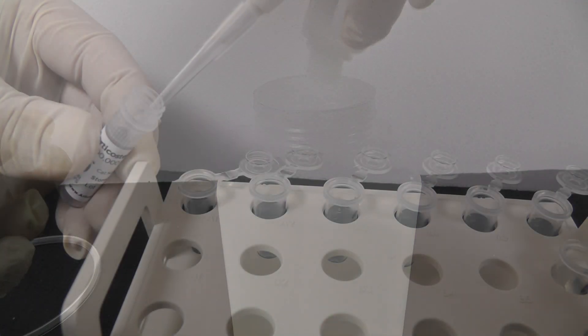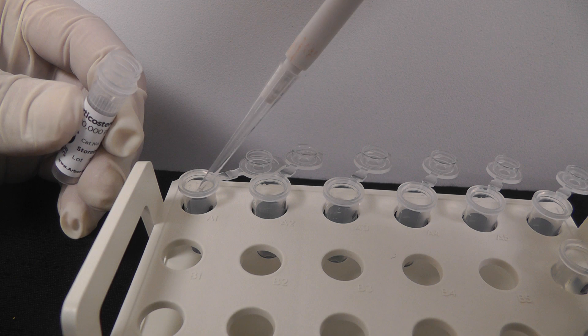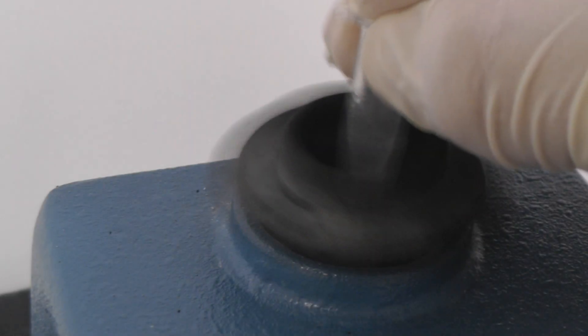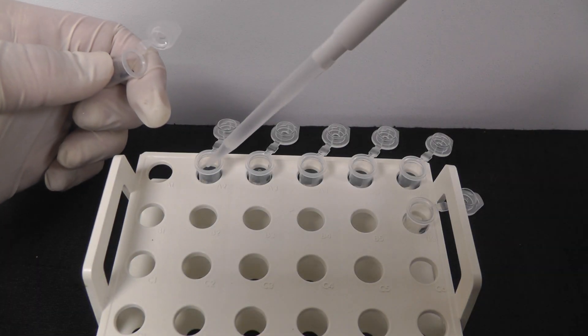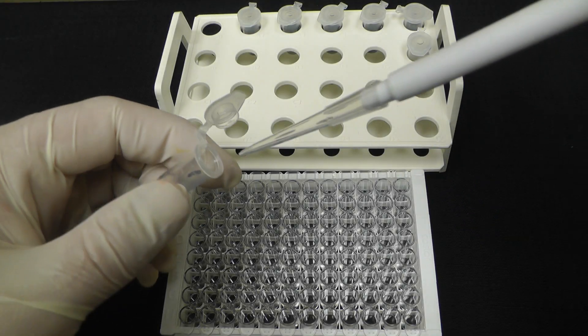Reagents, standards, and samples are prepared according to the manufacturer instructions. Here we've prepared seven standards in the range of 5000 pg per milliliter to 78.125 pg per milliliter of Corticosterone.